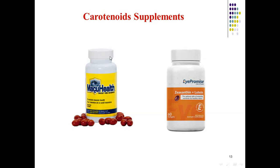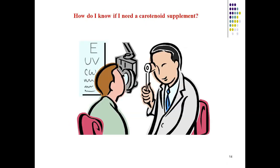There are two carotenoid supplements if you are not getting enough carotenoids in your diet. The first is MacuHealth with LMZ3, the only dietary supplement that contains all three critical carotenoids: lutein, zeaxanthin, and mesozeaxanthin found in the macular pigment of the eye. The second is EyePromise Zeaxanthin plus Lutein, which is designed to decrease macular pigment optical density and protect macular photoreceptors with the highest available level of dietary zeaxanthin.